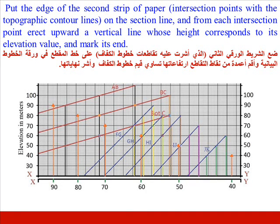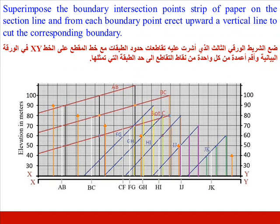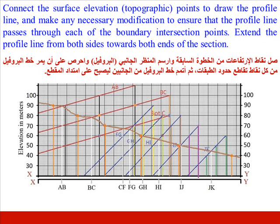Put the edge of the second strip of paper on the section line and from each intersection point erect upward a vertical line whose height corresponds to its elevation value, marking its end. Superimpose the boundary intersection point strip of paper on the section line and from each boundary point erect upward a vertical line to cut the corresponding boundary. Connect the surface elevation points to draw the profile line, making any necessary modification to ensure the profile line passes through each of the boundary intersection points. Extend the profile line from both sides towards both ends of the section.